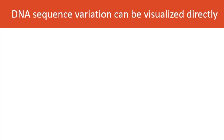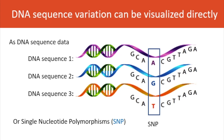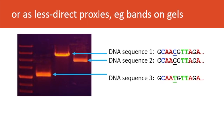DNA sequence variation can be visualized directly as DNA sequence data. Here we see three different sequences of DNA which differ by one of the DNA positions. The same data can also be analyzed as single nucleotide polymorphisms, or SNPs. DNA sequence can also be visualized as less direct proxies such as bands on gels, which separate sequences by some property, often size of the piece of DNA.